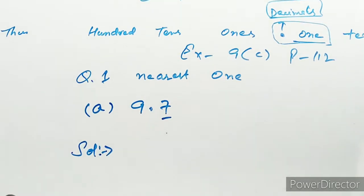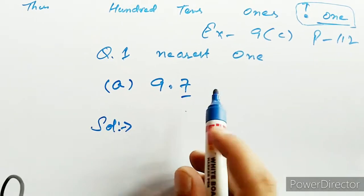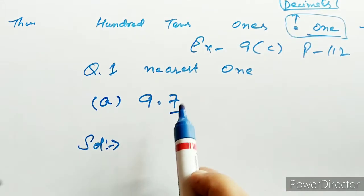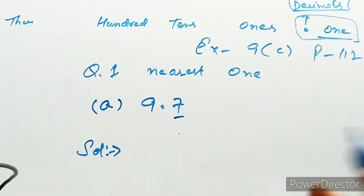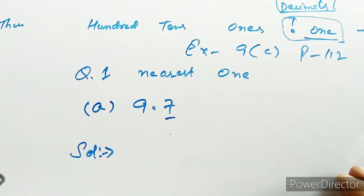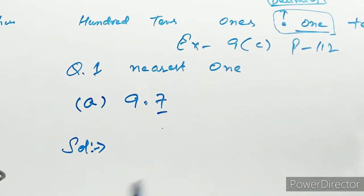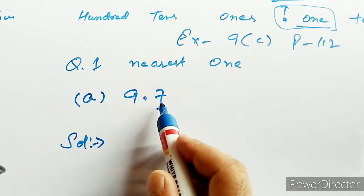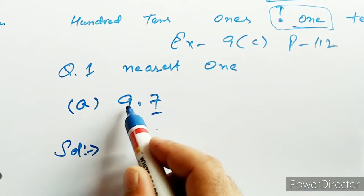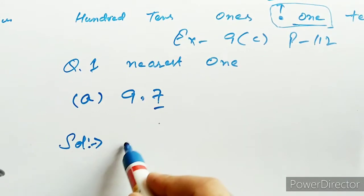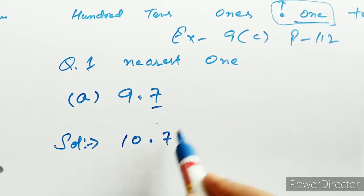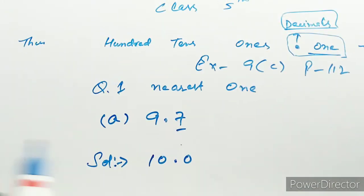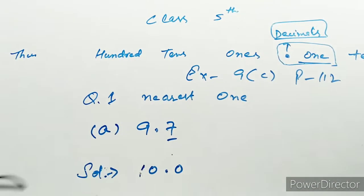तो देखें इसका solution — point के आगे वाले को round off करना है। इस digit को देखेंगे — यह 7 है। Round off करने का process सेम रहेगा: अगर 4 तक होगा तो 0 रहेगा, लेकिन अगर 5, 6, 7, 8 होगा तो आगे plus 1 करेंगे। तो 9 के अंदर plus 1 हो जाएगा, तो यह बन जाएगा 10। 10.0 की जगापे 0 लिखेंगे, यानी answer है 10। 10.0 का मतलब 10 ही होता है।